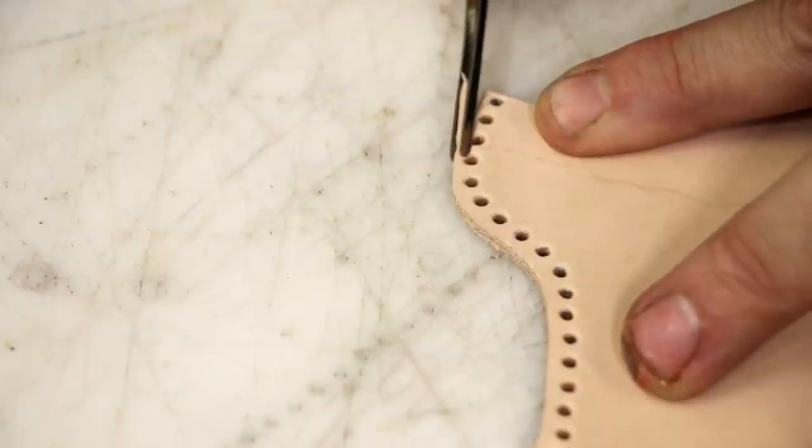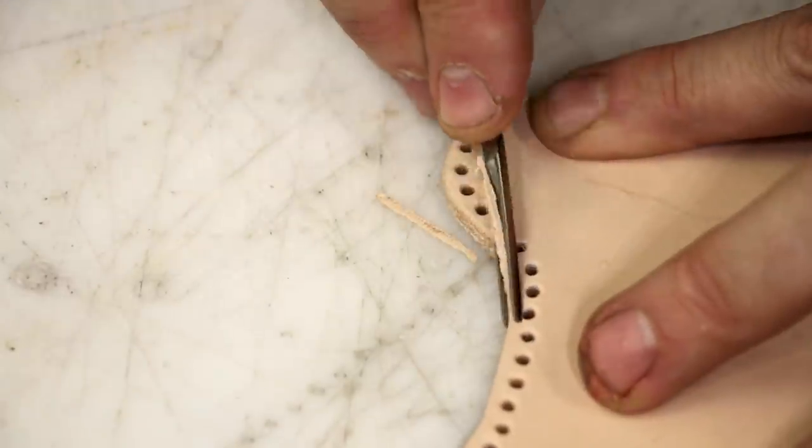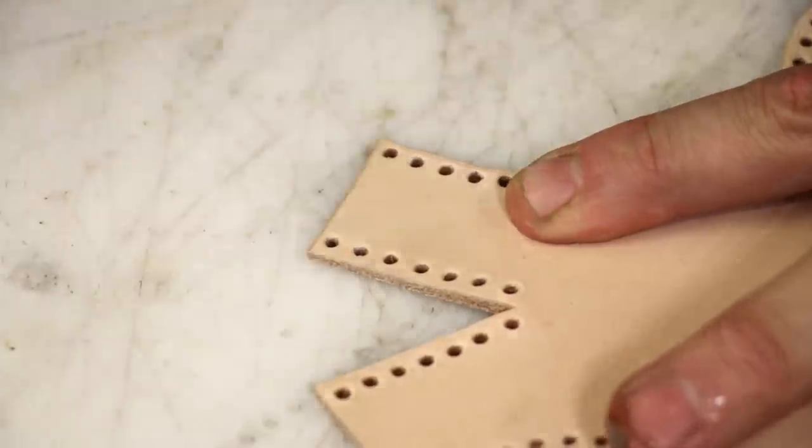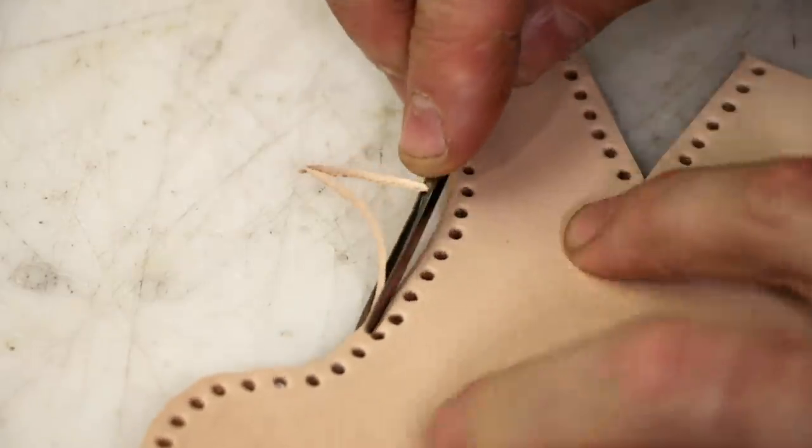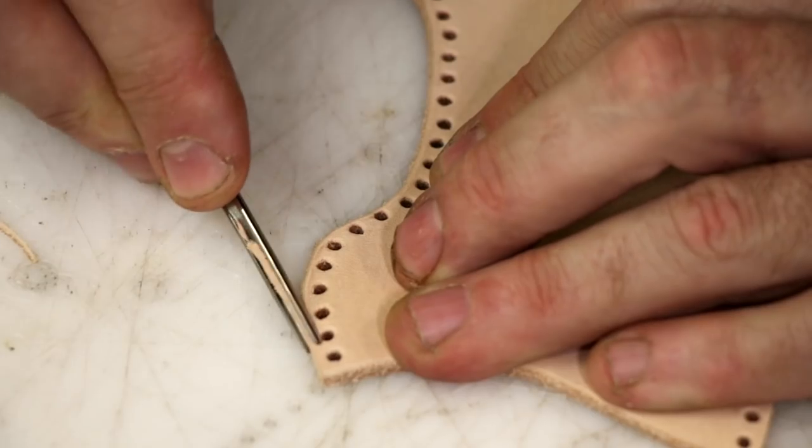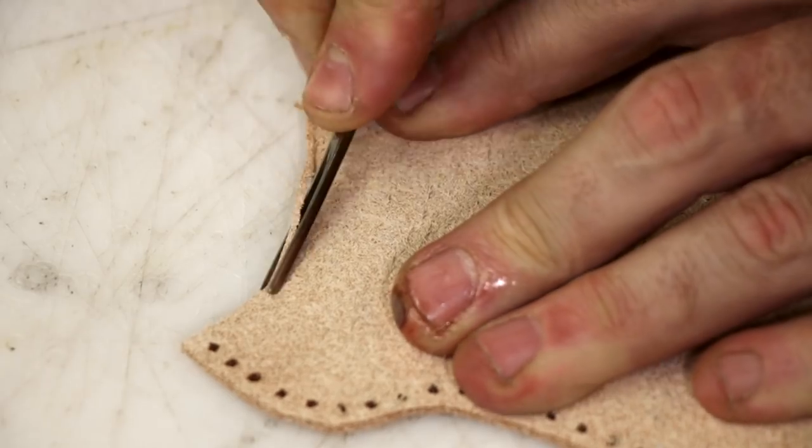Now I just bevel everything both sides. I don't bevel where I've darted the front center of the mask, because I want it to butt up as nicely as possible when I stitch it. But otherwise I'm beveling both sides of the whole thing.